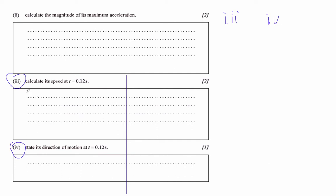There's two ways to do this. Since it's the speed, we could use the speed formula. V is plus or minus omega square root of x naught squared minus x squared.